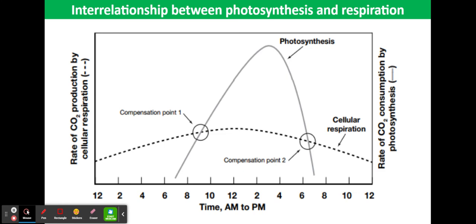When photosynthesis and respiration proceed at the same rate so that there is no net gain or loss of carbohydrate, the plant is at its compensation point.